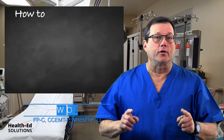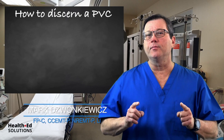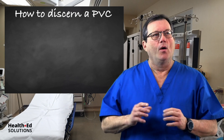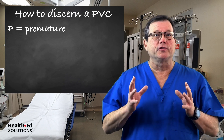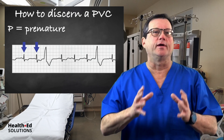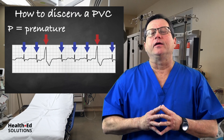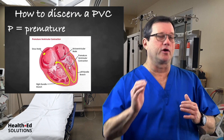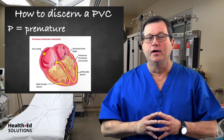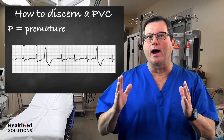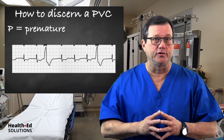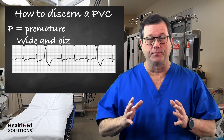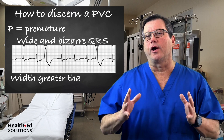How do we discern a PVC — a premature ventricular contraction — on our ECG tracing? The P stands for premature, so this beat comes before the next expected beat. It originates from the ventricles, which means it takes a very slow retrograde conduction backwards. This slow conduction creates a wide complex on our ECG tracing, so PVCs are often described as being wide and bizarre.